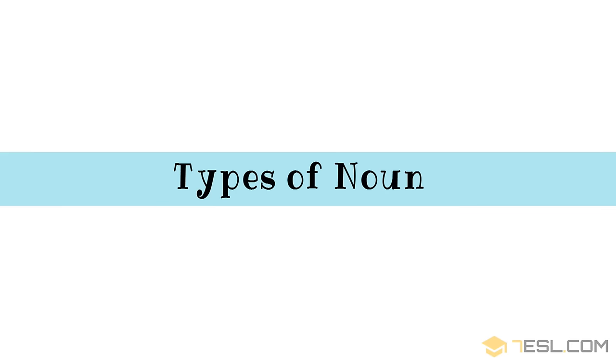Types of Nouns: Type, Definition, Examples